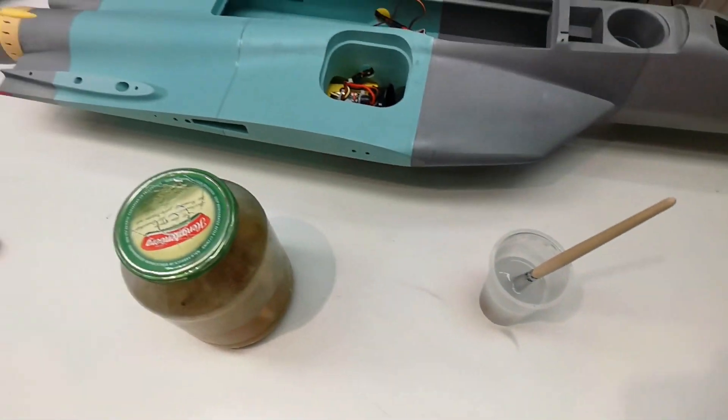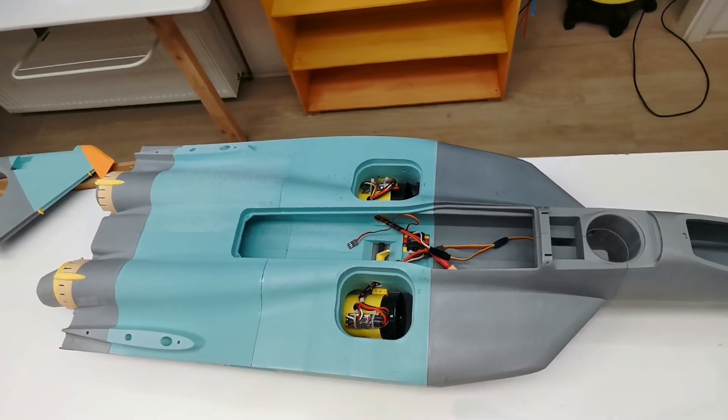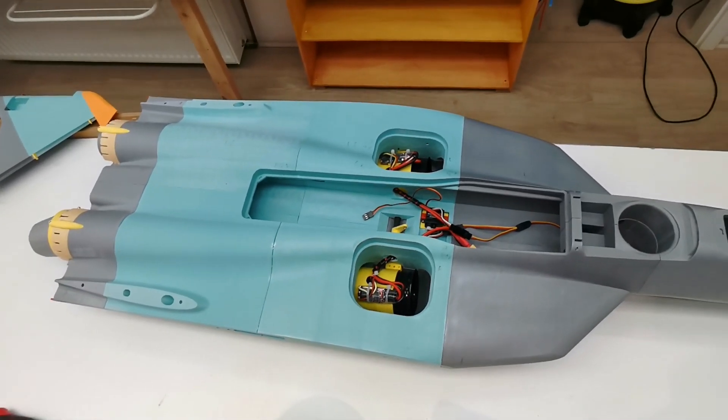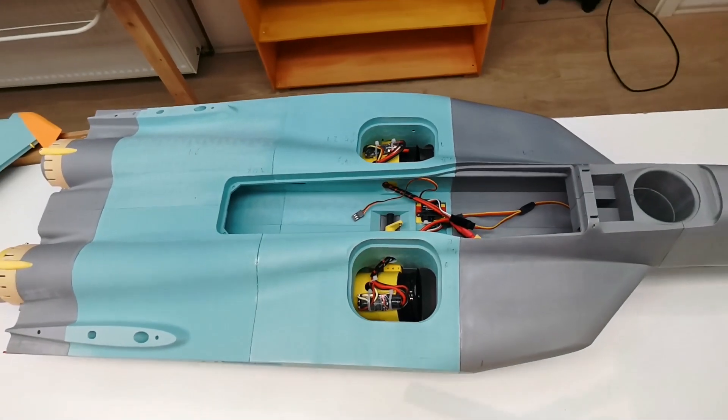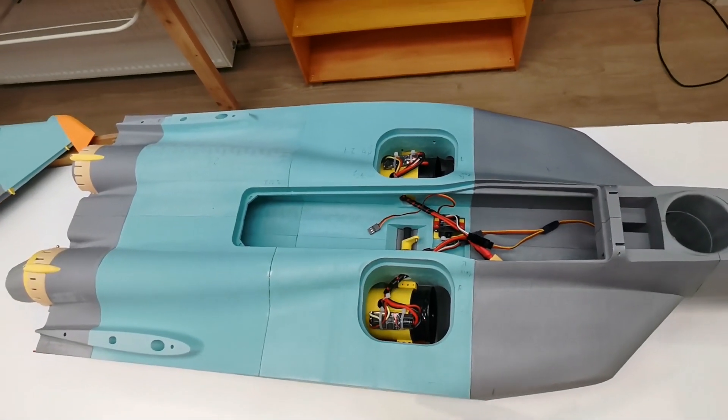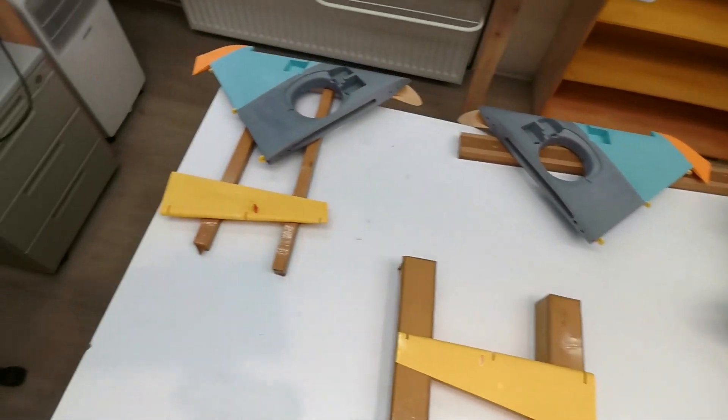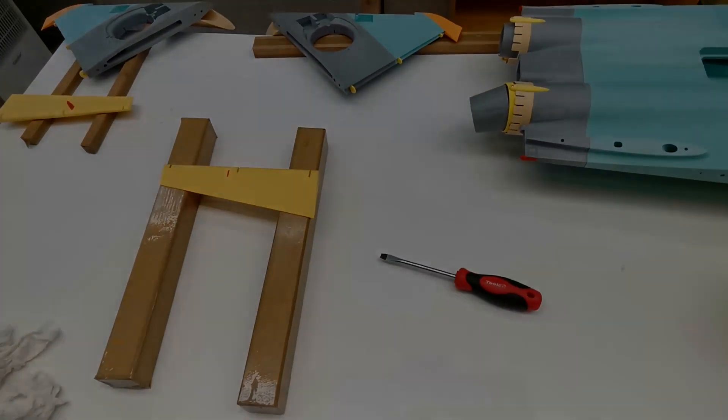So now I will give them one day for curing. And we can see when we take a look, here is the resin side, this is varnish. There is not that big difference. Looks mostly the same, also on the wings and ailerons. And tomorrow we will take a look at it.